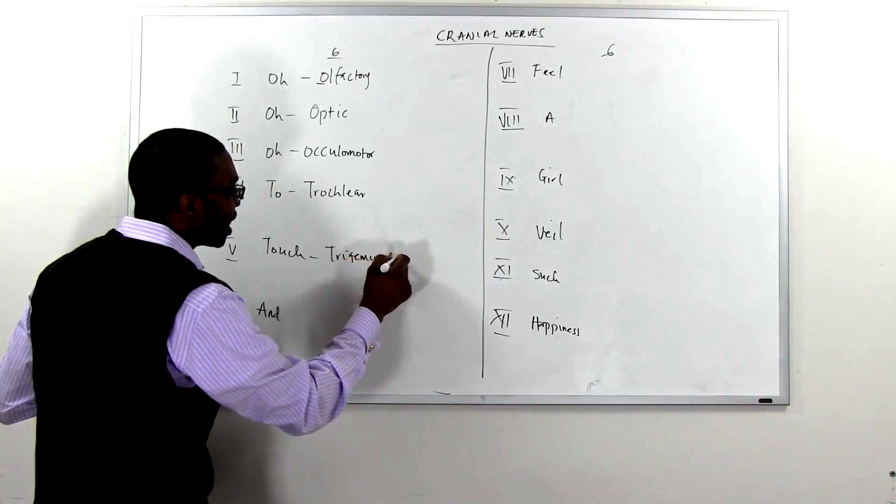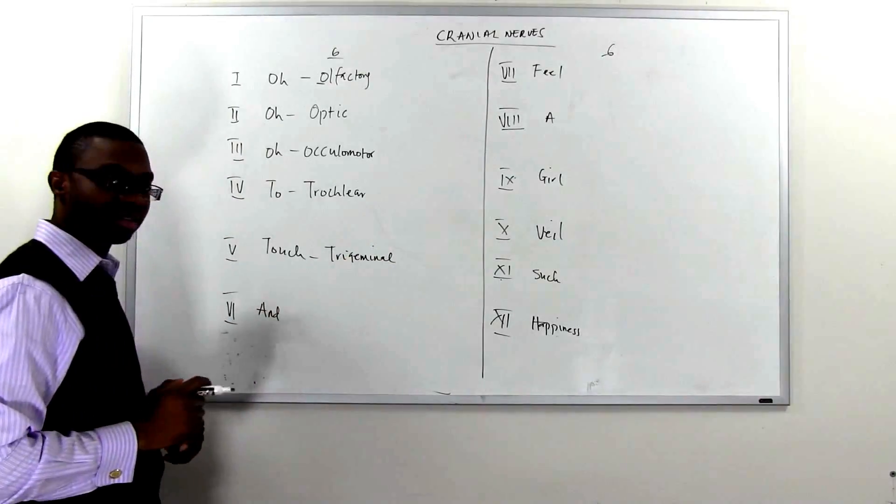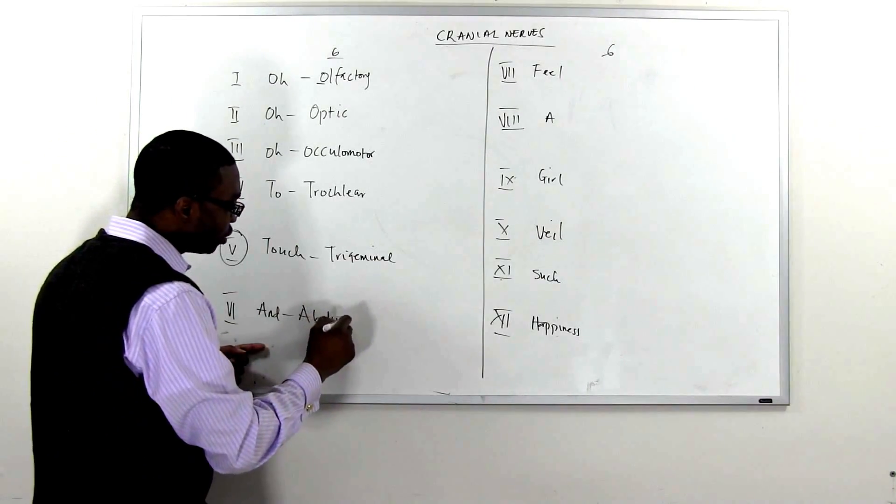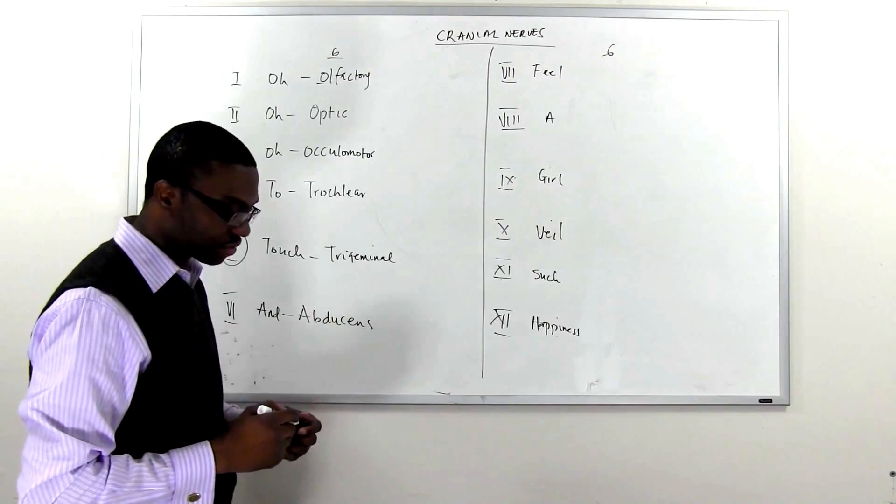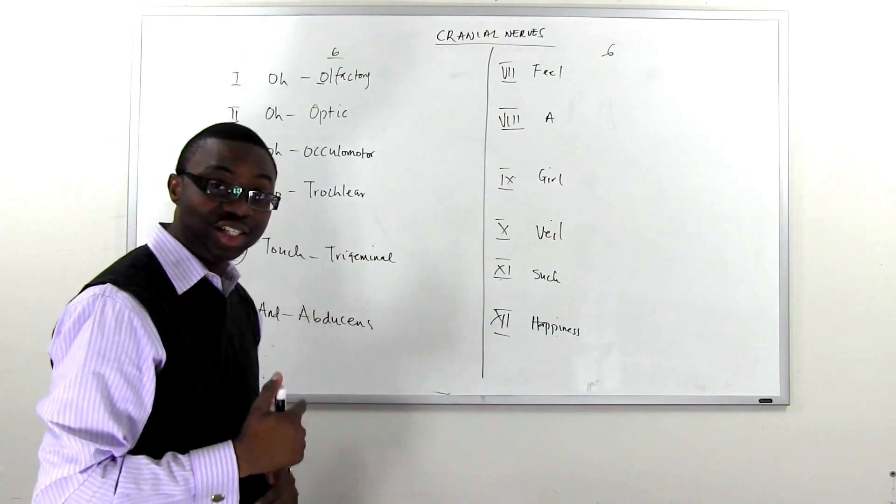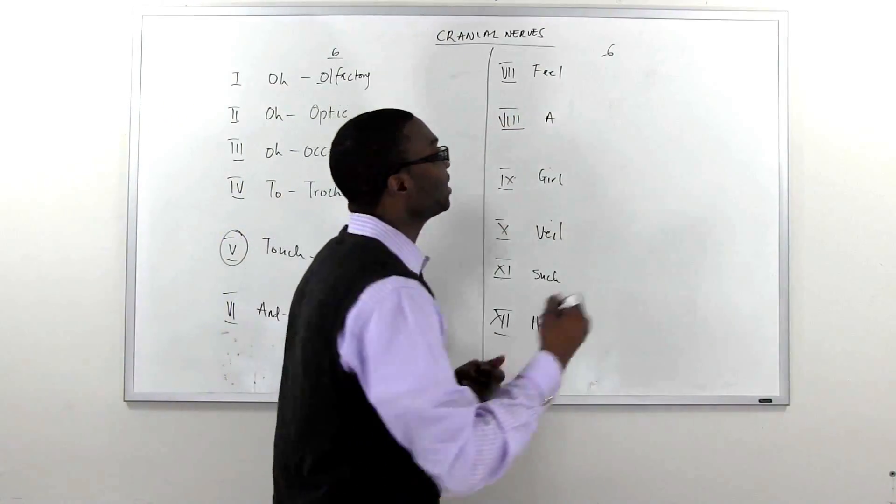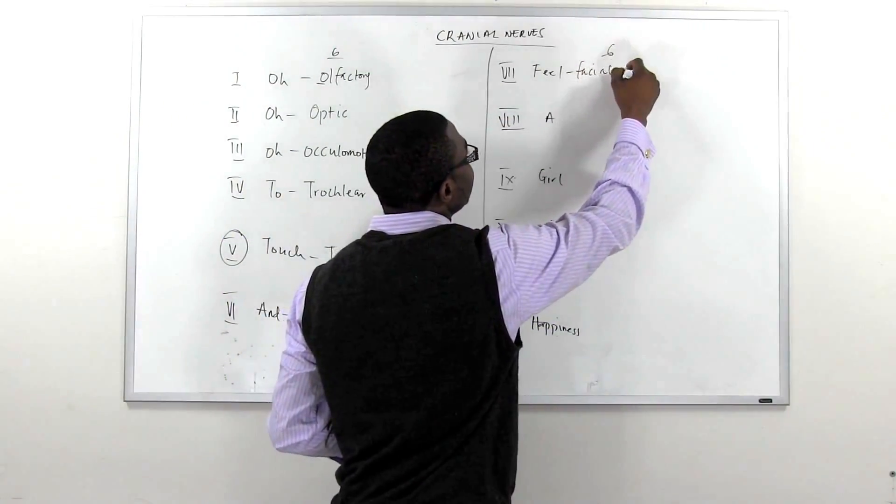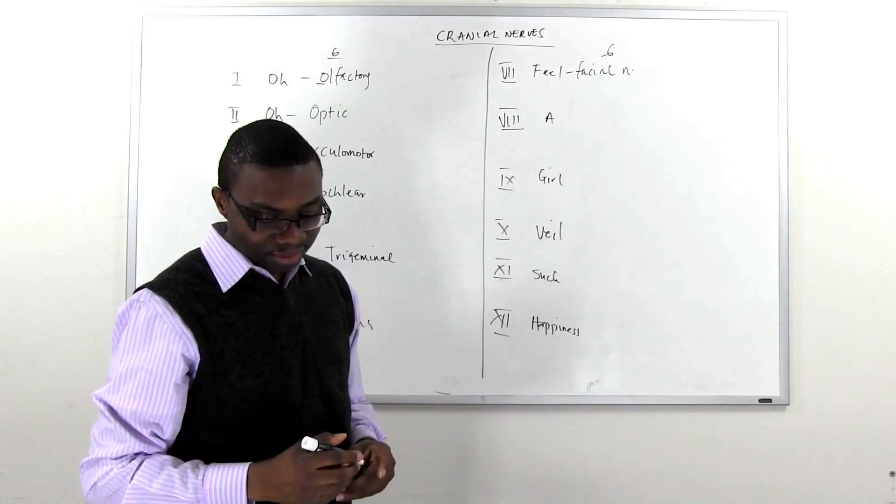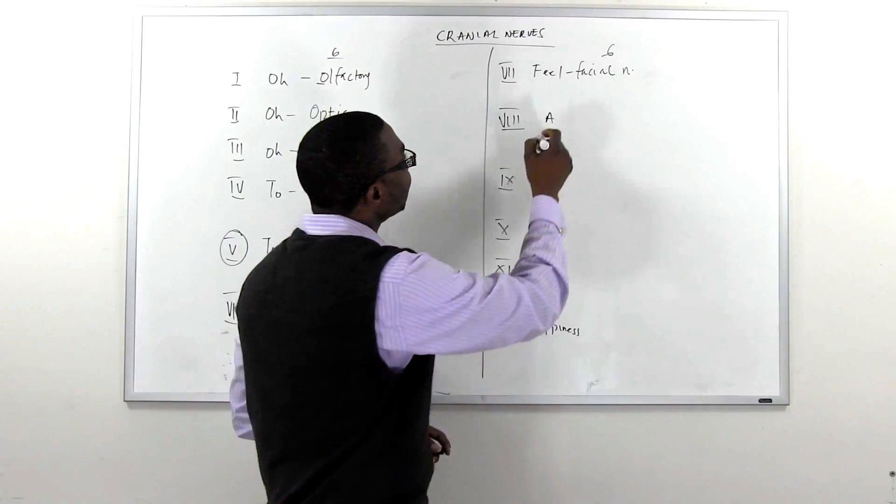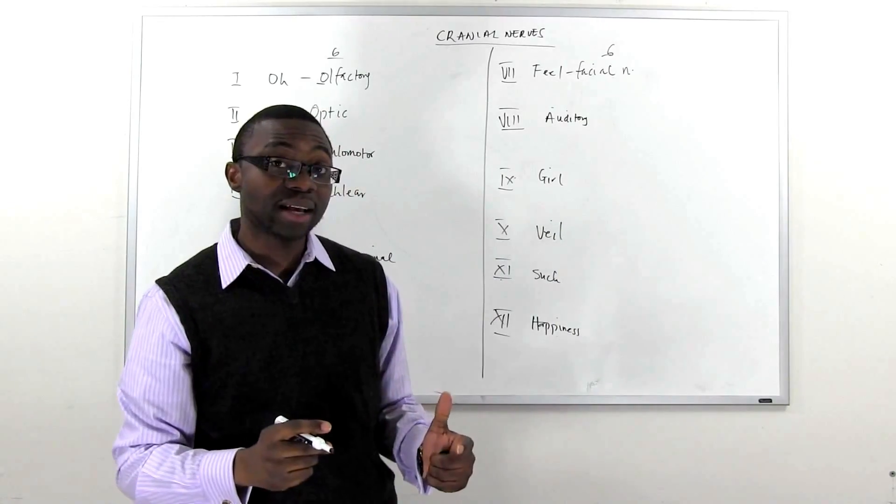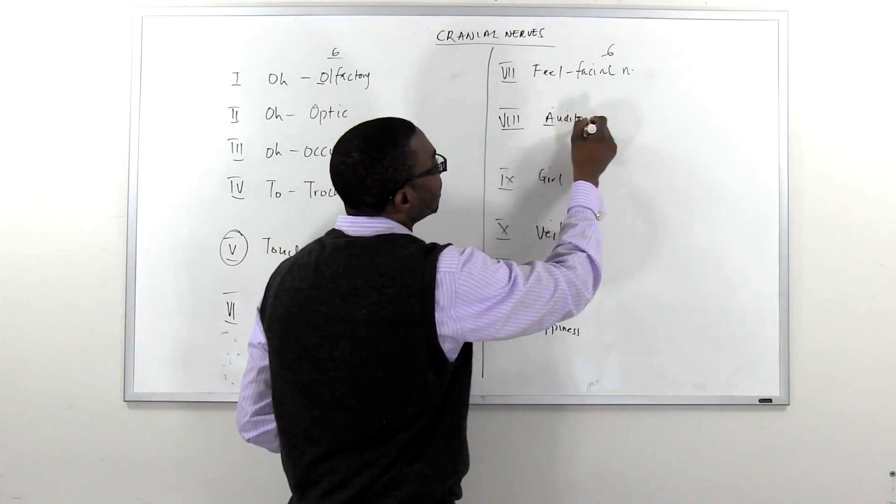T stands for Trochlear, Trochlear nerve. To touch, and, so O O we've got. And number five is Trigeminal, the trigeminal nerve, the fifth nerve. And is Abducens, Abducens nerve, number six. So we've got O O to touch and, let's feel. In order to feel, that's the facial nerve. And number eight used to be known as the auditory. That's why it's A, feel A girl.